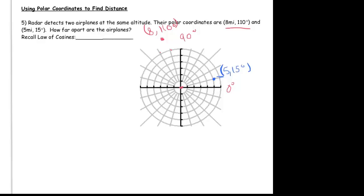We're expected to find the distance between those two points, so this black line will be the distance between them. This problem is pretty straightforward because we can make a triangle by connecting the pole to the first plane and the pole to the second plane. We know enough about this triangle to find that third side — by the definition of polar coordinates, this length is 8 and this length is 5.